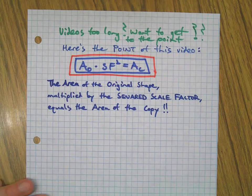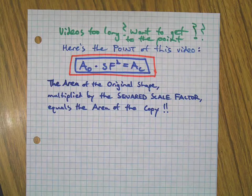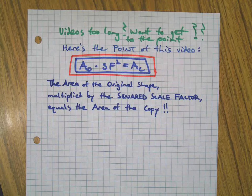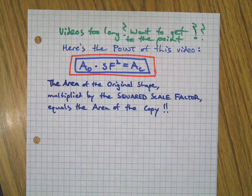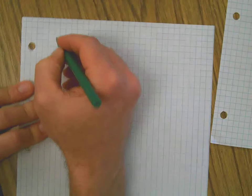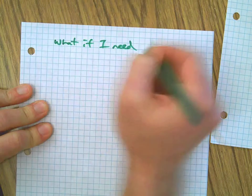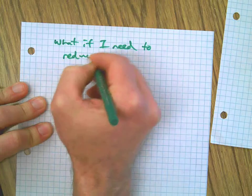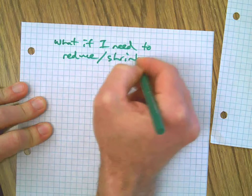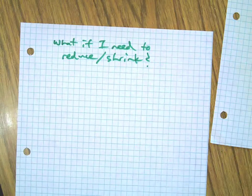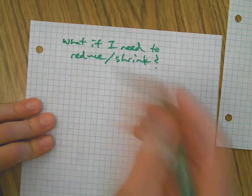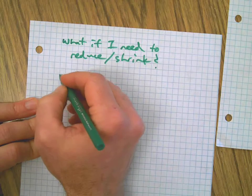And same thing with the red one: original area, squared scale factor, new area. This is crazy! That's it. After all, the point of this is if you take the area of the original two-dimensional shape and you want to make a scaled copy and you want to find the area of that copy, you don't need to draw it. You can just take scale factor, square it, and you've got the area of the copy. You might be thinking, wow that's cool, but what if I need to reduce or shrink a shape? Will it still work? Well, can you still square a scale factor? Let's find out.